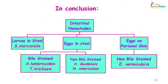To conclude, we discussed intestinal nematodes. The intestinal nematode where you see larvae in the stool is Strongyloides stercoralis. The ones where you see bile-stained eggs in the stool are Ascaris lumbricoides and Trichuris trichiura. The non-bile-stained ones are Ankylostoma duodenale and Necator americanus, and eggs found on the perianal skin are the non-bile-stained Enterobius vermicularis eggs. Thank you — I hope you have understood intestinal nematodes.